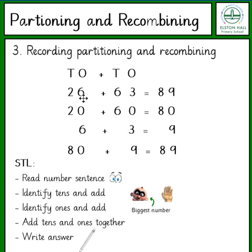Now let's look at the 1s. 26 has 6 ones, 63 has 3 ones. We put the bigger number in our head — 6 in our head, 3 on our fingers: 6, 7, 8, 9. Now we need to add the numbers back together. So we have 80 plus 9. We put 80 in our head and 9 on our fingers: 80, 81, 82, 83, 84, 85, 86, 87, 88, 89.